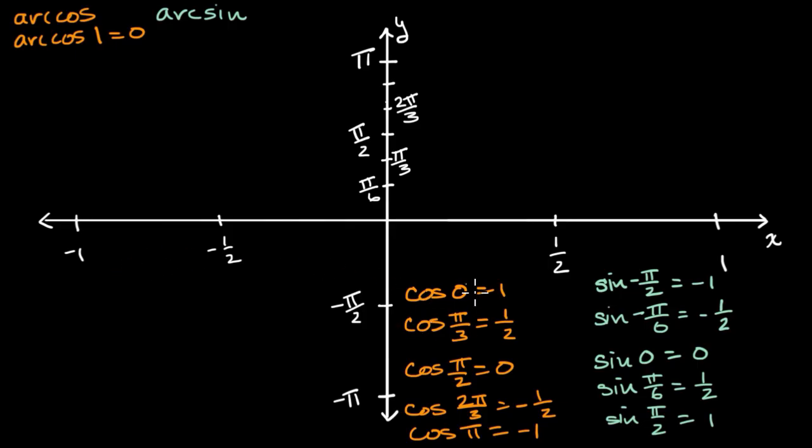So let's use that information now to graph what arc cosine might look like. The arc cosine of one is going to be zero. So if x is one, then we're going to be at zero, right over there. The arc cosine of one half is going to be pi over three. Arc cosine of zero is going to be pi over two.